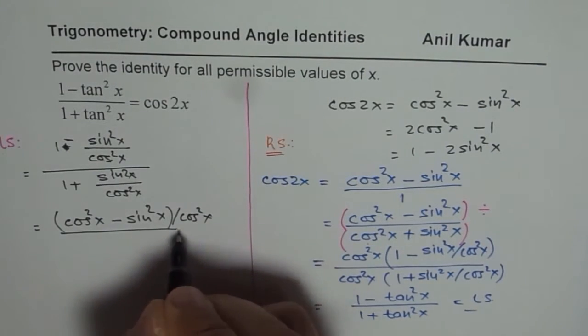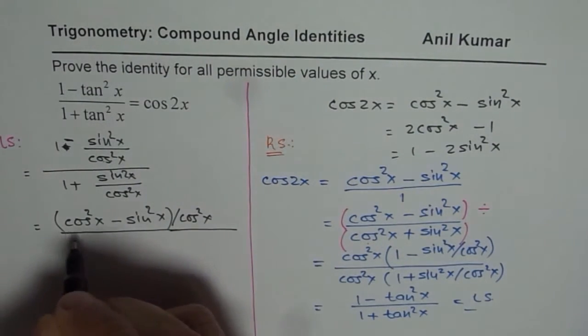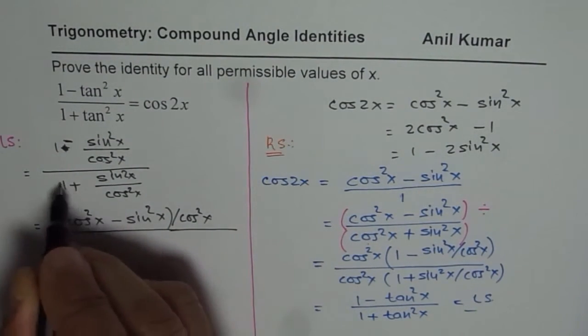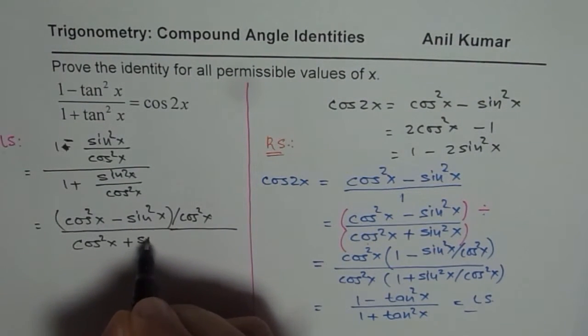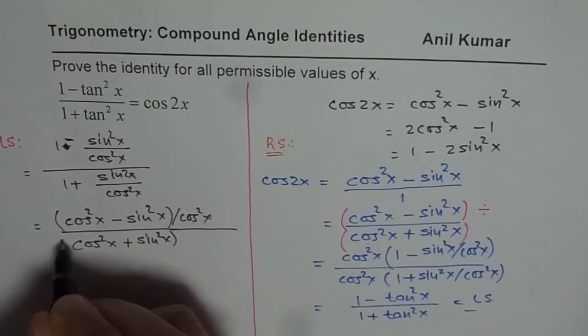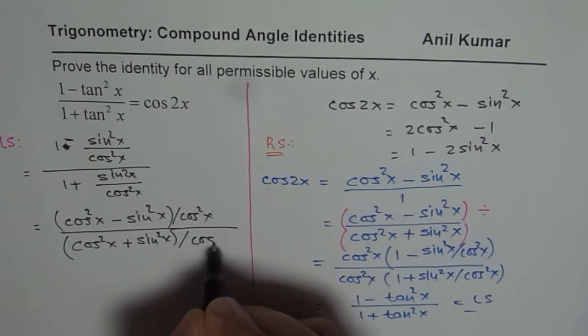Cos square x, let me write like this. I am going to save some space here, and then again we get the same thing, cos square x plus sin square x this time, in the denominator, divided by cos square x.